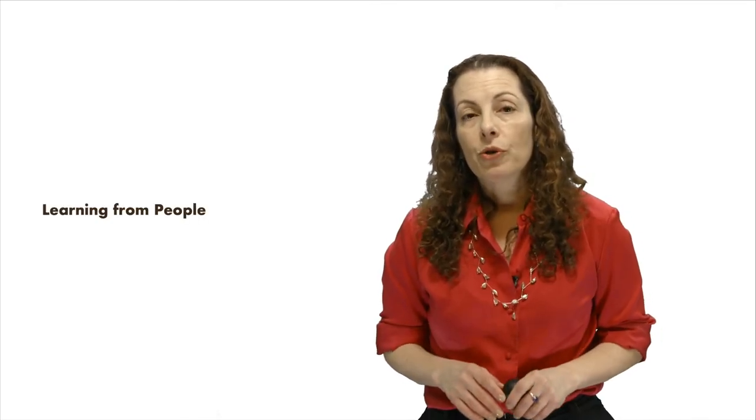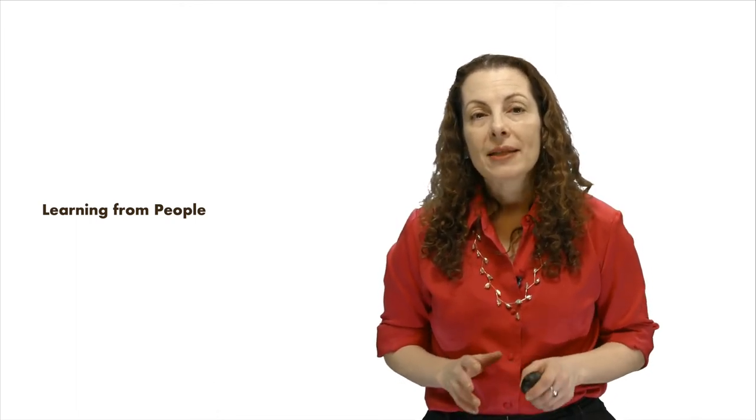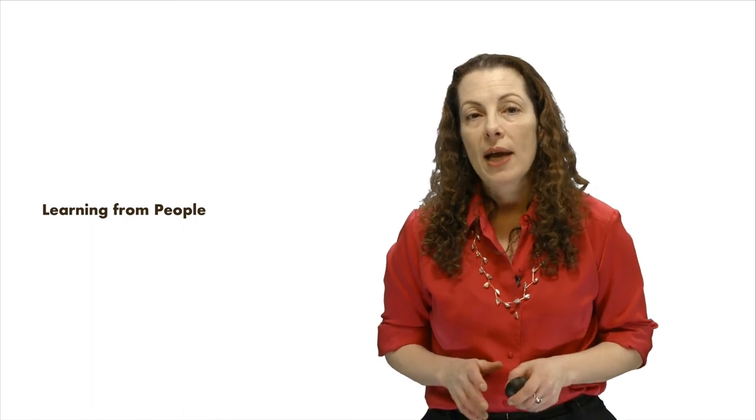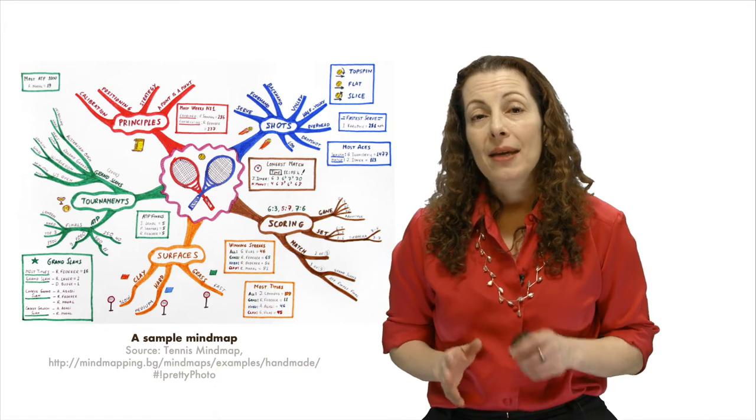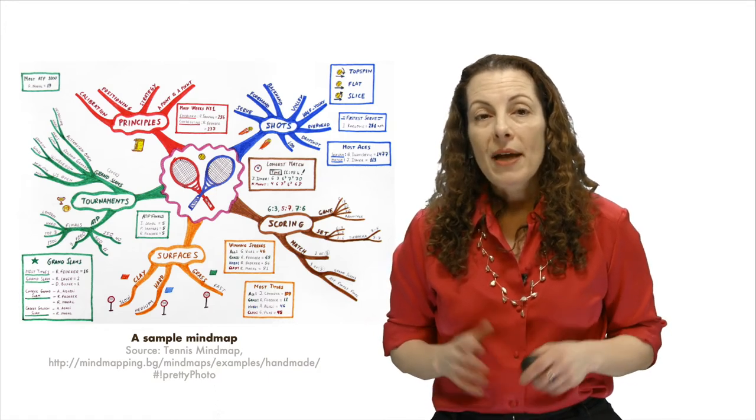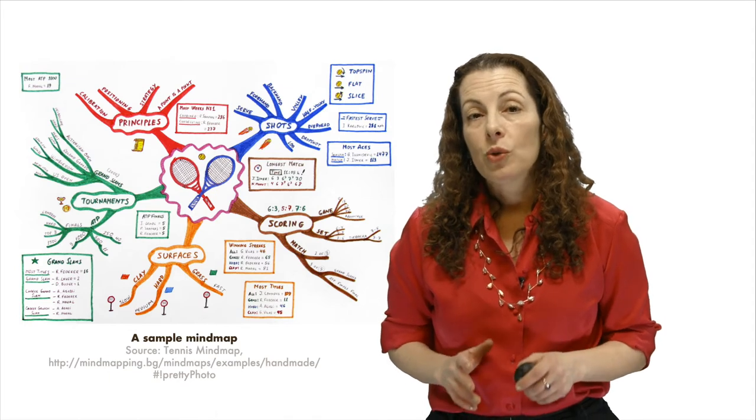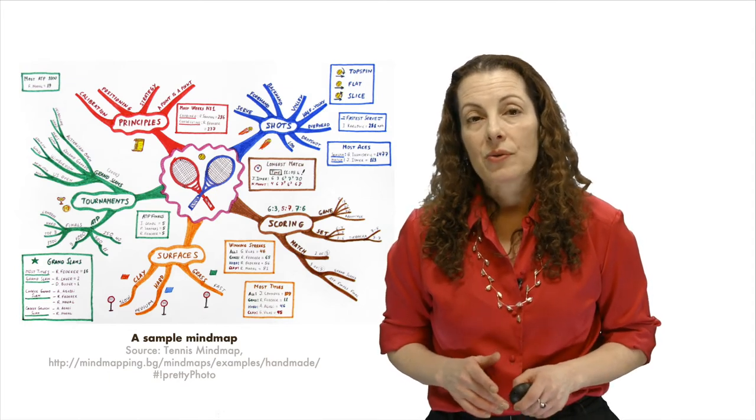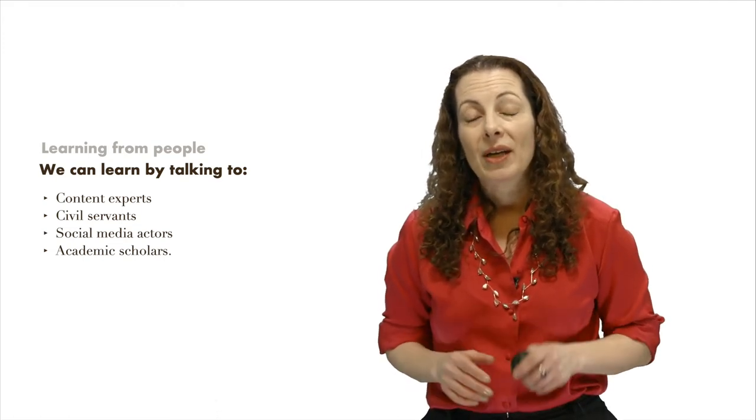The public entrepreneur should not just ask what solutions are out there, but who is out there. Informed people are the fastest shortcut to learning what has been tried and what is working. You'll want to create a map of organizations and knowledgeable individuals. The best contacts will not only provide helpful information, but also connect you to other people and relevant documents. We can learn by talking to content experts, civil servants, social media actors, and academic scholars.